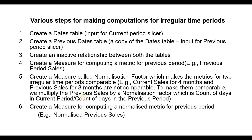Then create a measure called normalization factor, which makes the metrics for two irregular time periods comparable. For example, if the current sales is for four months and the previous period sales is for eight months, they are not comparable. To make them comparable, we multiply the previous period sales by a normalization factor, which is the count of days in the current period divided by the count of days in the previous period. The sixth and final step is to create a measure for computing a normalized metric for the previous period — for example, normalized previous sales. So let's carry out these steps one by one.